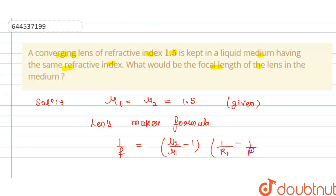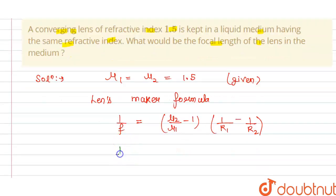So from this we can say that 1 divided by f, that is our focal length, this will equal 1.5 divided by 1.5 minus 1, and this is 1 divided by R₁ minus 1 divided by R₂.